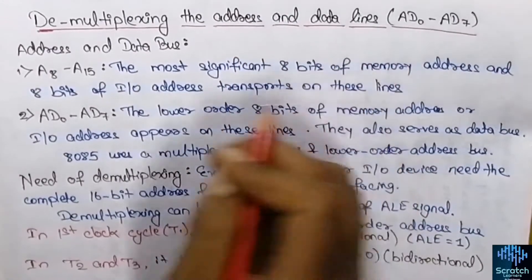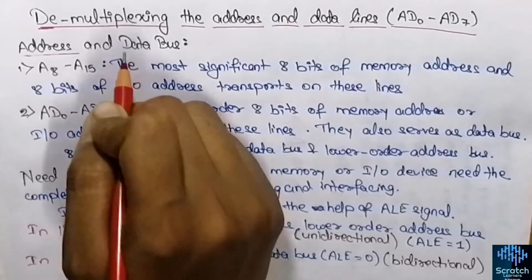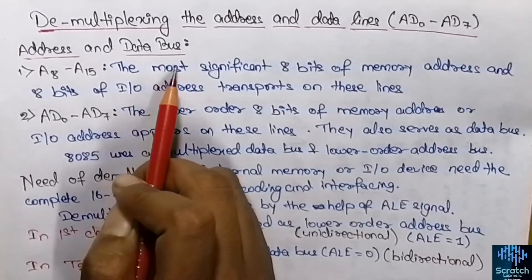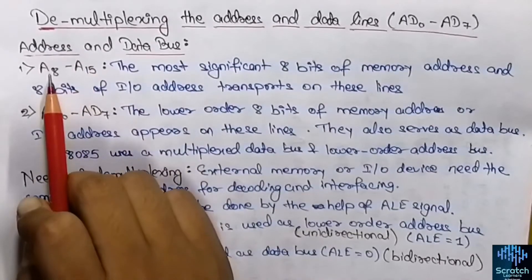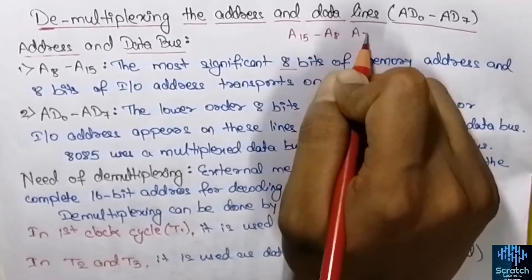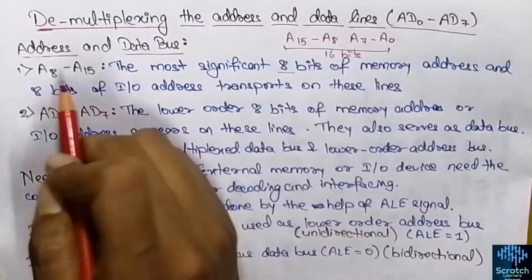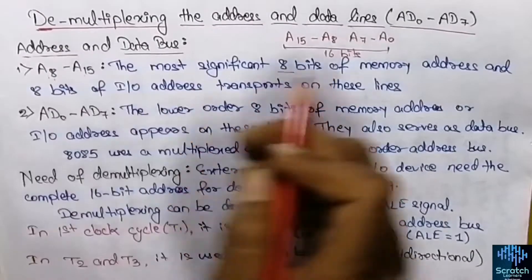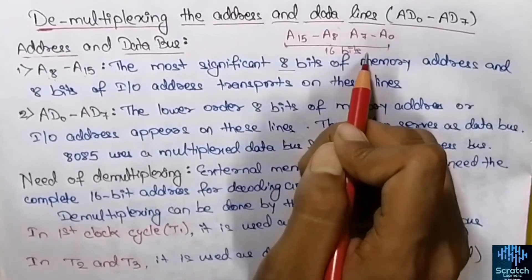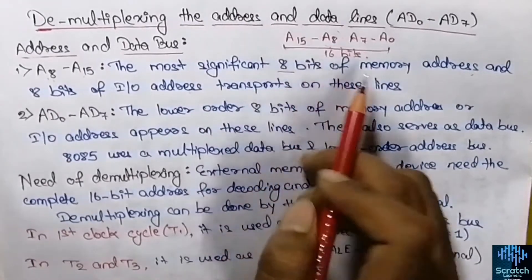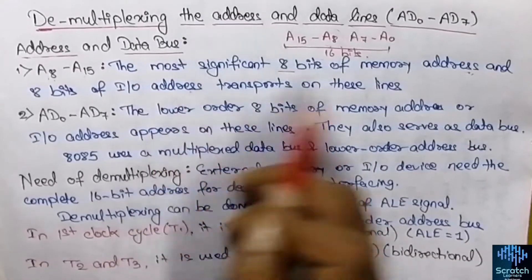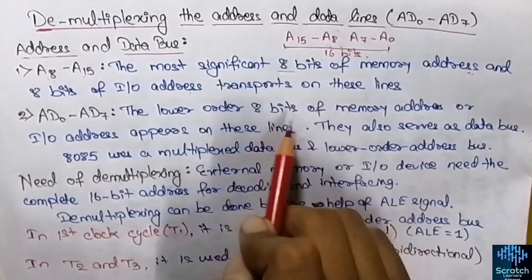Before starting with the demultiplexing process of address and data lines, let's understand what the address and data bus are in the 8085 microprocessor. The 8085 has address lines A8 to A15, which are the most significant 8 bits of the 16-bit address. These bits are used as the memory address and the I/O address.